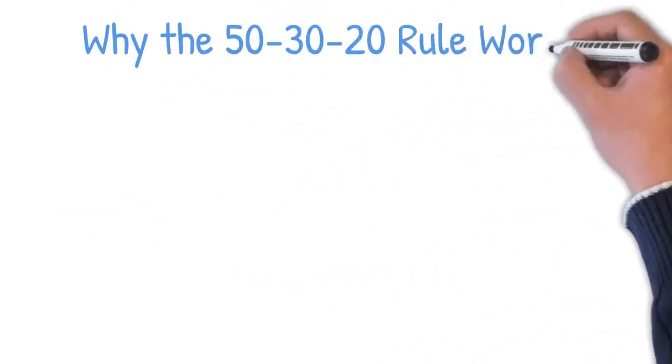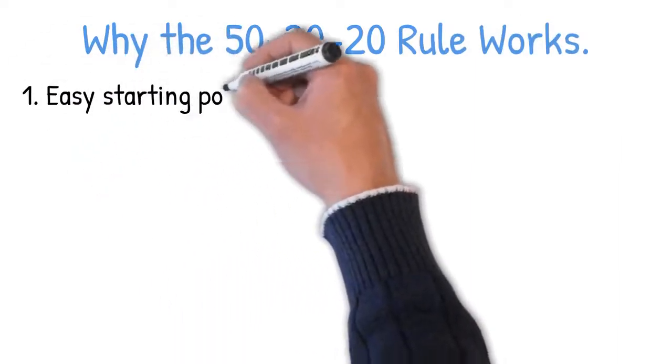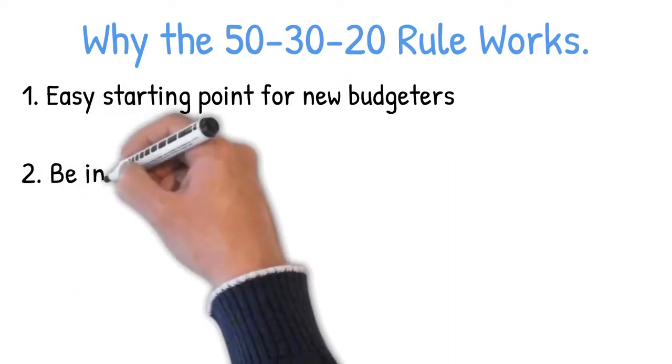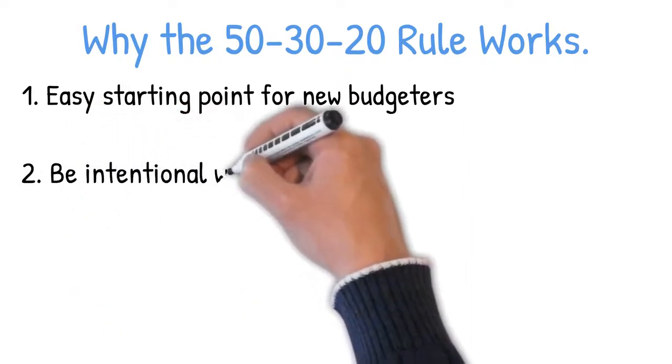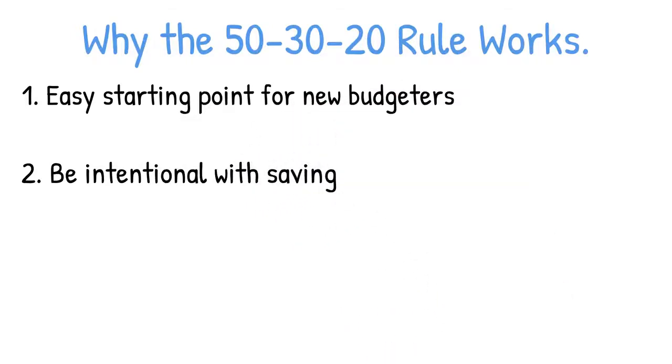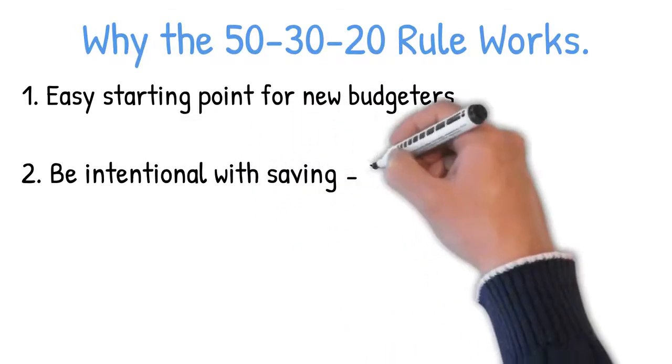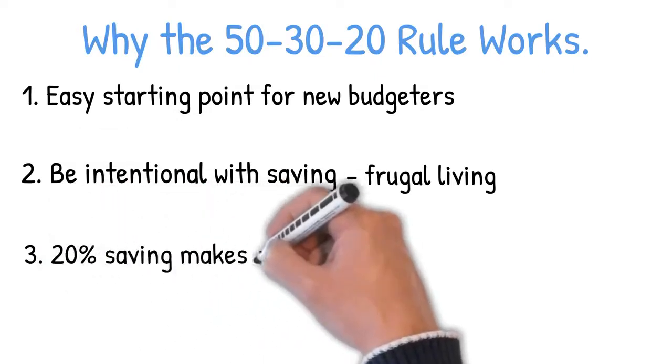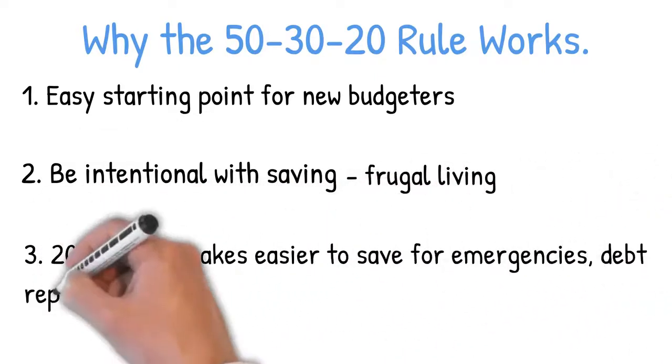Why the 50-30-20 rule works? The 50-30-20 rule is an easy starting point for new budgeters. The budgeting rule only focuses on the three big spenders: needs, wants, and savings. As a result, it's easy to follow for anyone. The 50-30-20 rule also compels you to be intentional with your saving. You get to prioritize more on needs and wants, and thus it's an excellent tool for frugal living. Moreover, the 20% saving allocation makes it easier to save for emergencies, debt repayment, investments, and retirement.